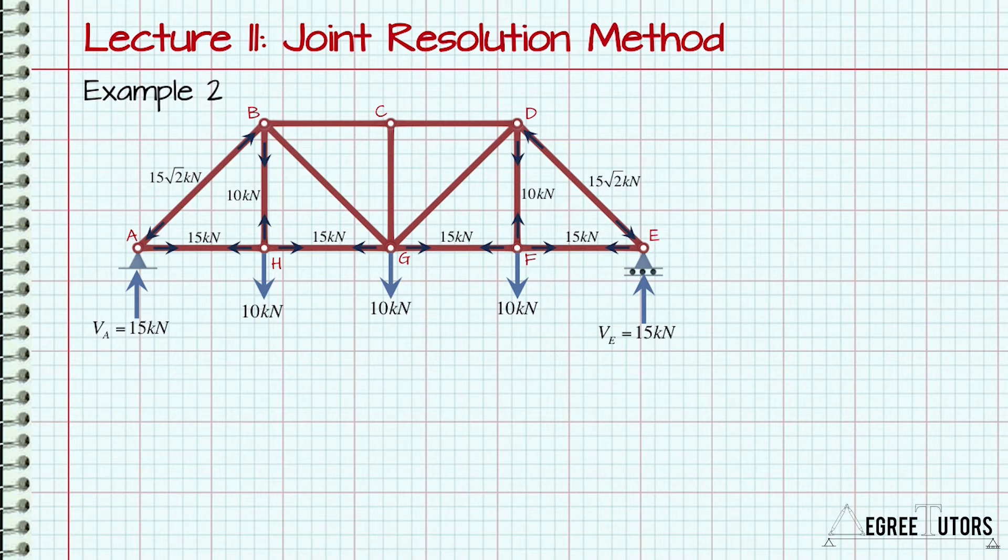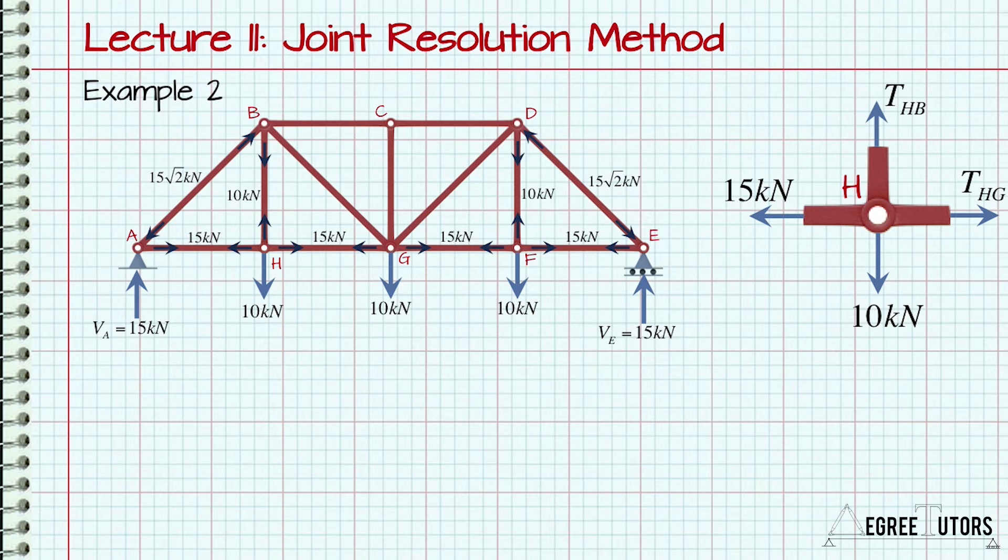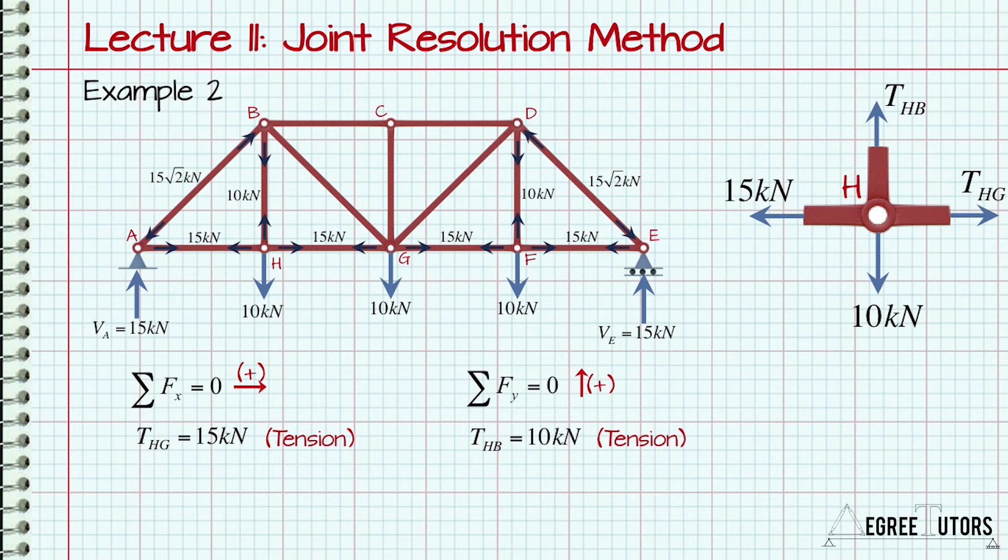The next joint we can tackle is H, as it has only two unknown member forces. Isolating H, we can see simply by inspection that THG equals 15kN tension and THB equals 10kN tension. In this case, the unknowns are obvious and there is no need to go through the process of writing out the equilibrium equations.